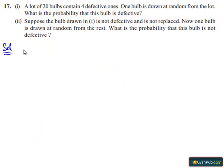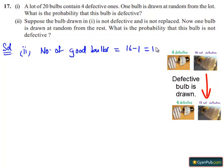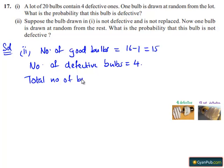Now let's see the second bit. Suppose the bulb drawn in the first part is not defective and is not replaced. One bulb is drawn at random from the rest. So number of good bulbs left in the lot equals 16 minus 1, which is 15. Number of defective bulbs equals 4. Total number of bulbs in the lot equals 15 plus 4, which is 19.